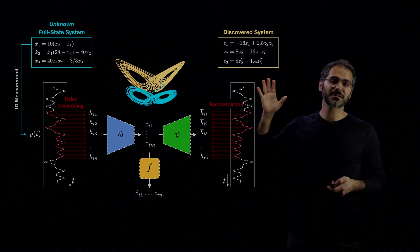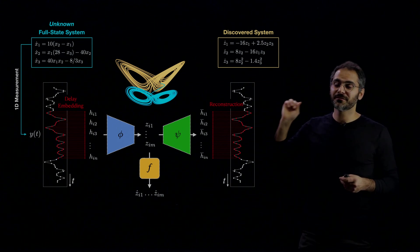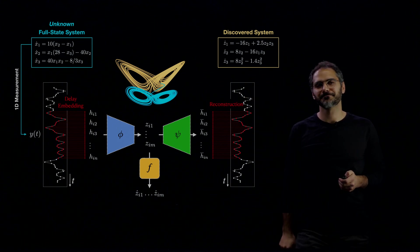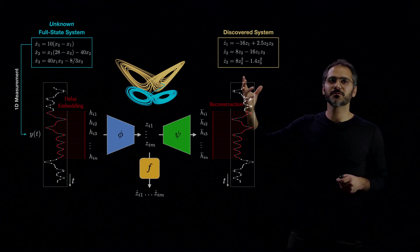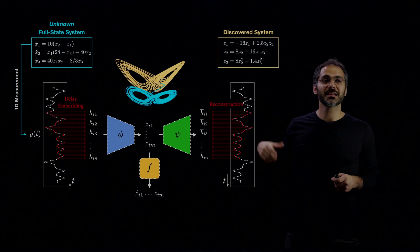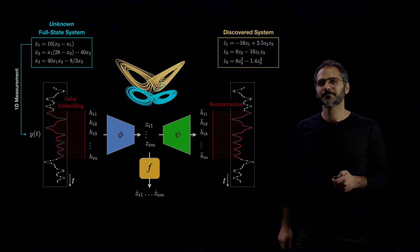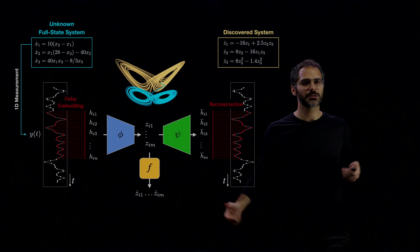And you can notice that the discovered system here is even sparser than the original system. And we can look at the system and make predictions for at least the first dimension and gain some insight as to the structure of the attractor, something that we cannot do with one dimension only.